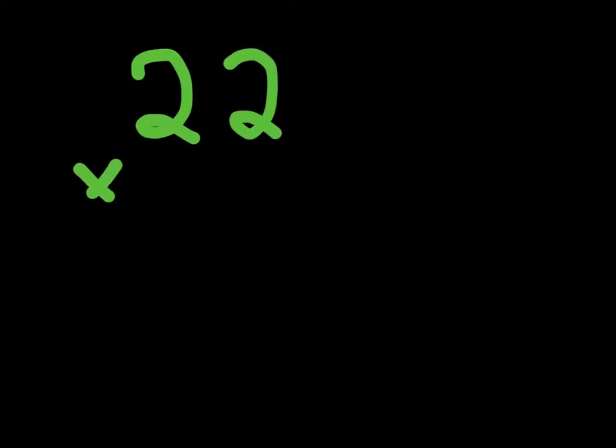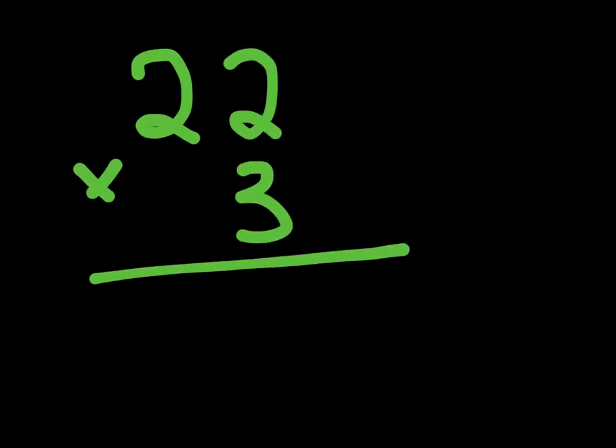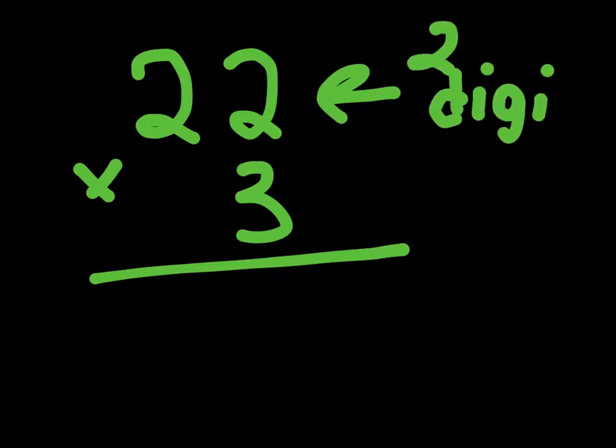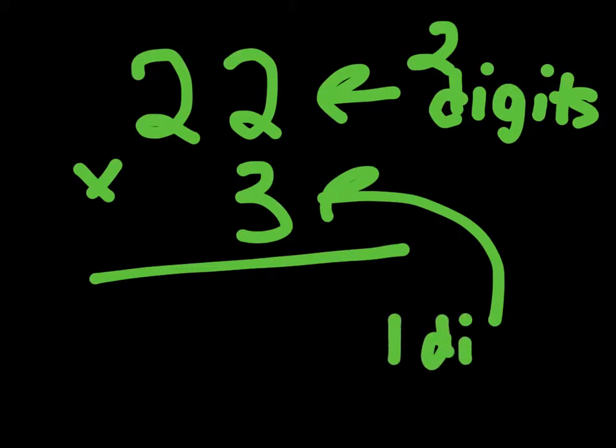Okay, so you guys must be wondering what 2 by 1 is. So that 2 by 1 is pretty much, let's say, 22 times 3. Okay, that 2 by 1 means 2 digits by 1 digit. Alright, fairly simple. Let's get started with a few problems now.